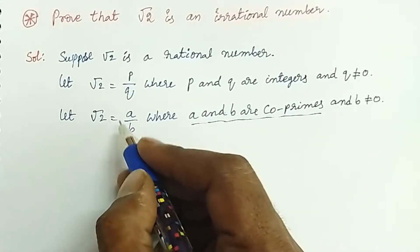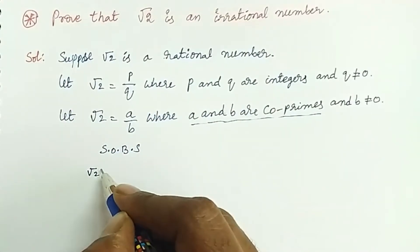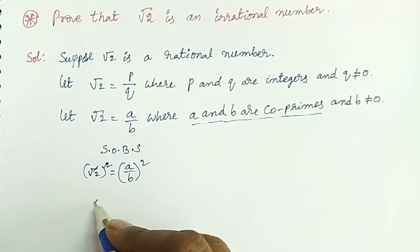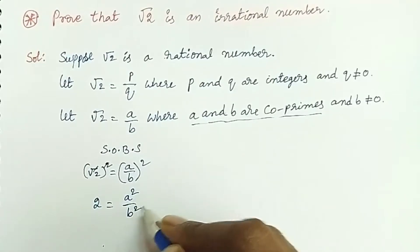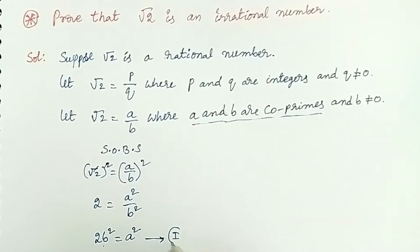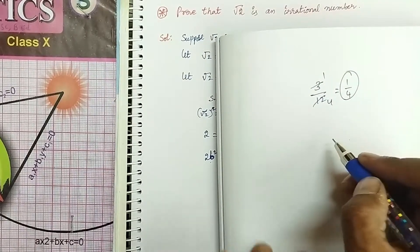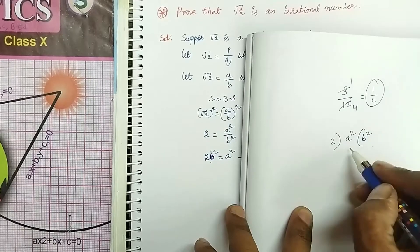So root 2 is equal to a by b, where a and b are co-primes. Squaring on both sides: root 2 whole square is equal to a by b whole square. This gives 2 equals a squared by b squared. Therefore, 2b squared is equal to a squared.